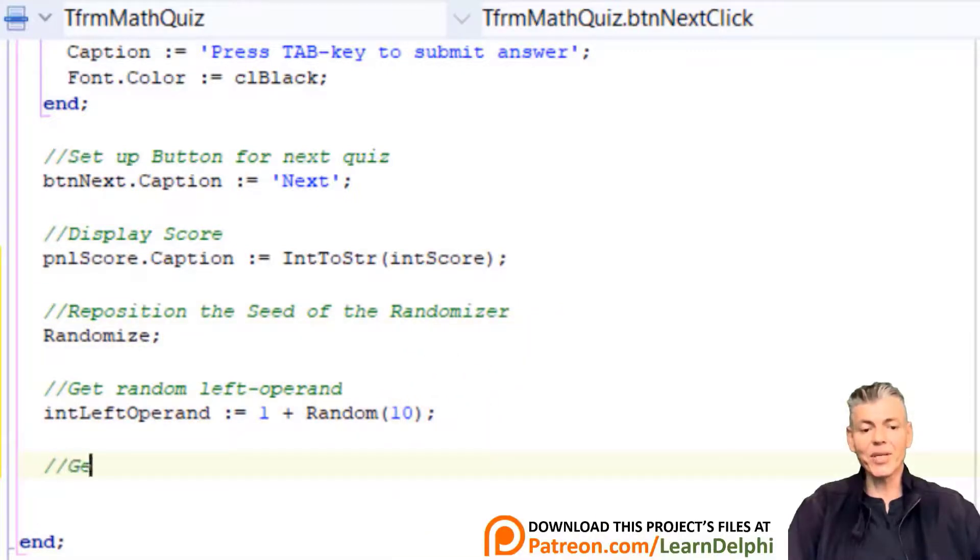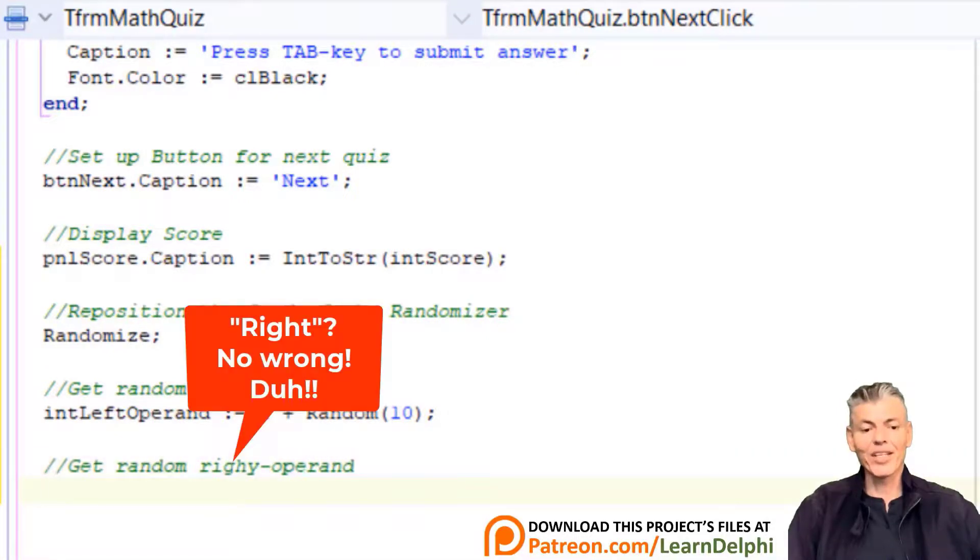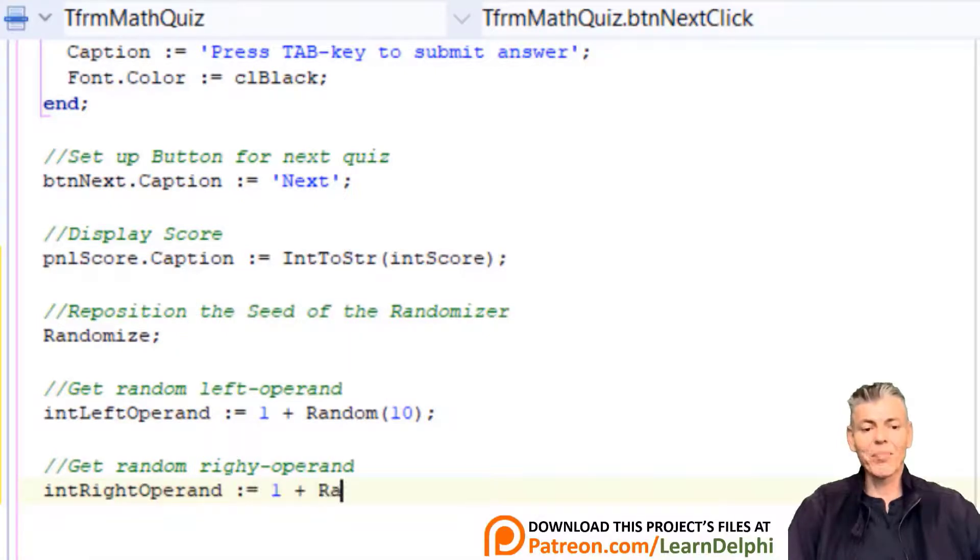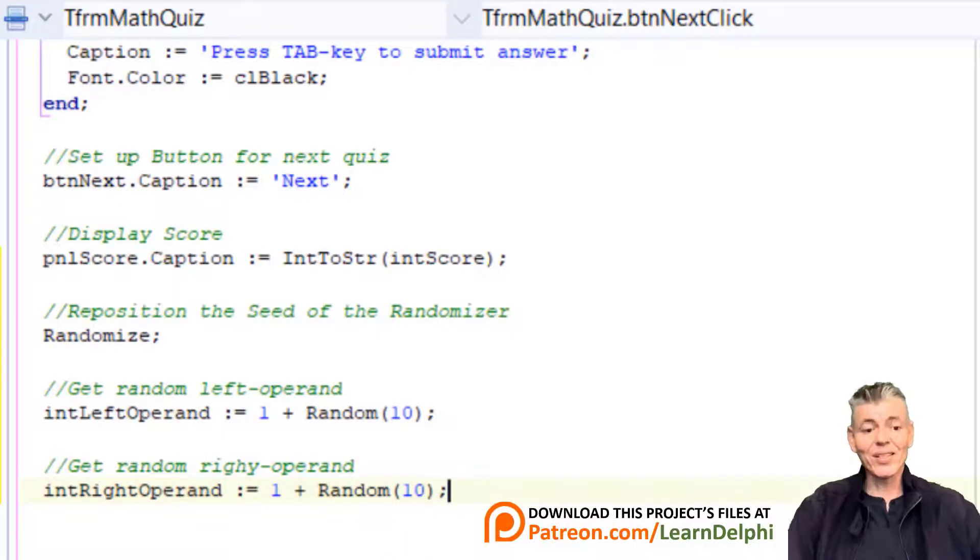Make a new line above this comment and type another comment: Reposition the seed of the randomizer. Press enter and type randomize. Now make a new line under this statement and type another comment: Get random right operand. Press enter and type intRightOperand := 1 + Random(10). This is the same as the code for the left operand we typed earlier. We first get a random number from 0 to 9 and we plus 1 to the result to exclude 0 and to include 10. Then we assign the result to intRightOperand.